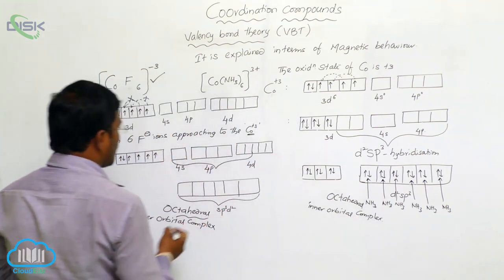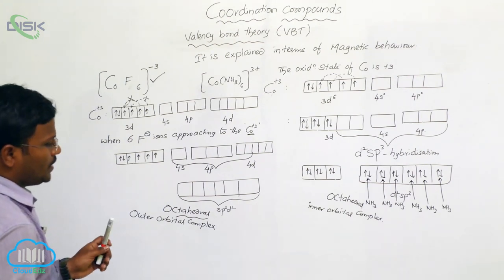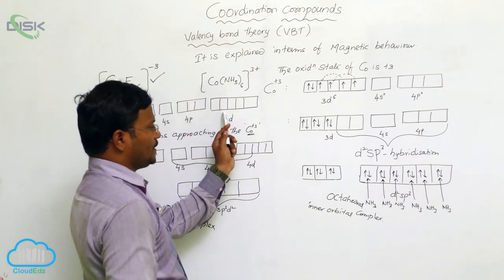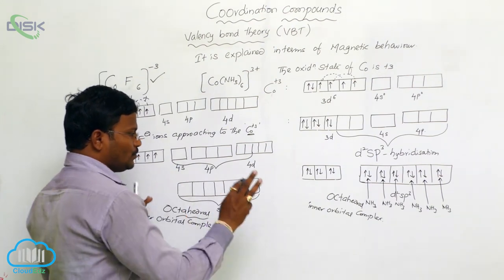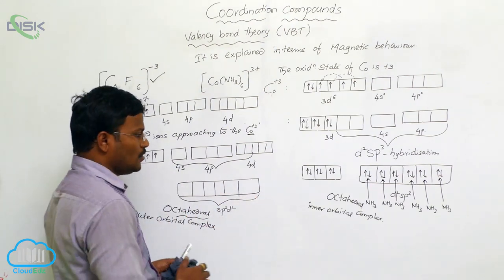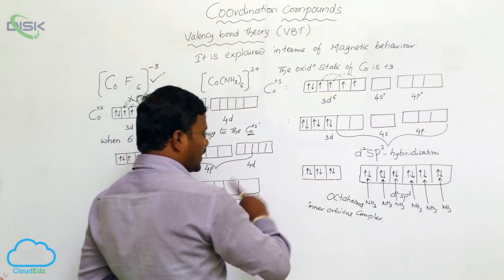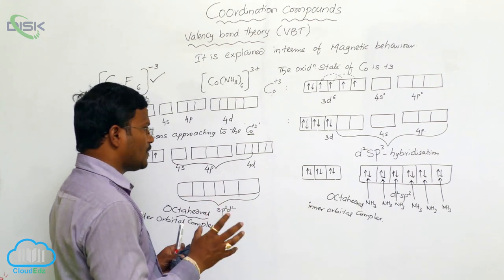So, it is outer orbital complex. So, this is valency bond theory to explain the formation of hexadentate metal complexes with octahedral geometry. Only two types of metal complexes are possible, inner orbital complexes and outer orbital complexes with different hybridization. The possibility of hybridization generally depends upon the strength of the ligand.